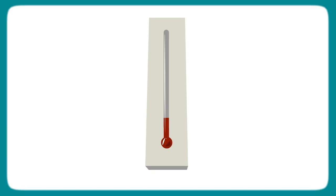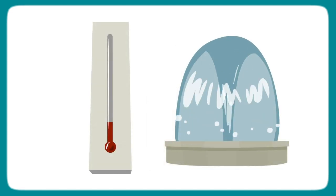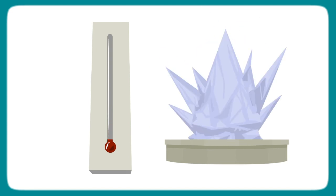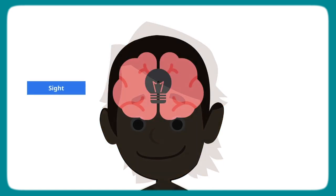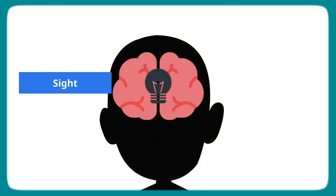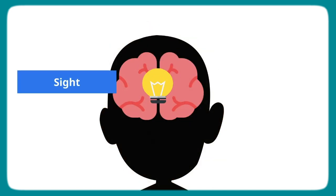A threshold is a specific amount or level on a scale. When a threshold is reached, something happens or changes. For example, when water is cooled past zero degrees Celsius, it passes a threshold and turns into ice. A sensory threshold is the amount of sensation needed for the brain to register or notice that input.